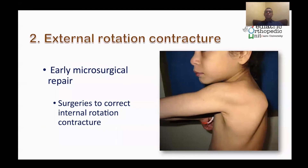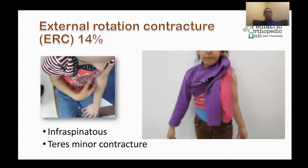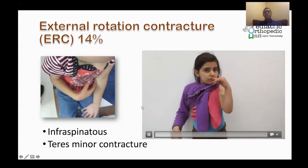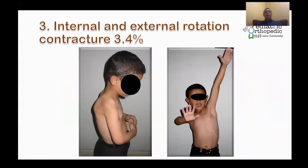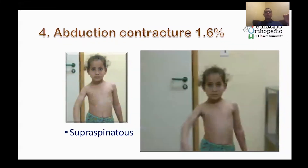External rotation contracture usually follows treatment of internal rotation contracture or early microsurgical reconstruction. In this case the patient is unable to place the hand on the abdomen with the wrist extended, and in severe cases the child cannot reach the mouth. Combined external and internal rotation contracture is usually missed and diagnosed as isolated internal rotation contracture, so it is important to test passive range of internal rotation fully.